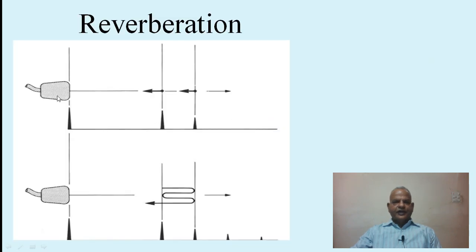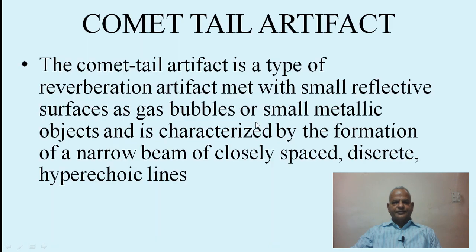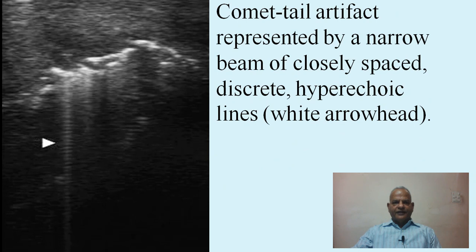This diagram shows how reverberation artifacts are produced — sound travels and is refracted and comes back incorrectly. The comet tail artifact is a type of reverberation artifact seen with small reflective surfaces such as gas bubbles or small metallic objects, and is characterized by the formation of a narrow beam of closely spaced discrete hyperechoic lines. Here you can see the comet tail artifact represented by white arrowheads.